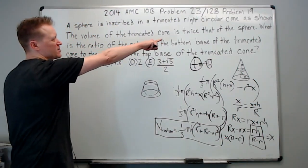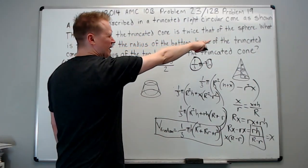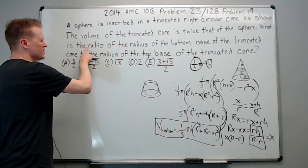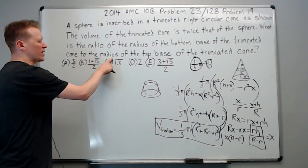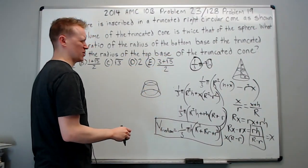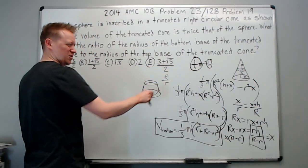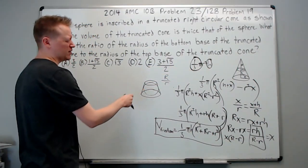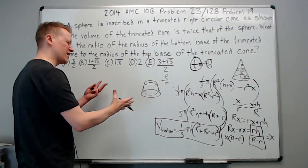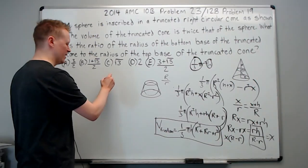Keep reading. So we've got the volume of the truncated cone is twice that of the sphere. What is the ratio of the radius of the bottom base of the truncated cone to the radius of the top base of the truncated cone? So we're looking basically for big R to little r from over there, but maybe we can make our lives a little easier. Number one, people aren't very good at drawing in 3D shapes, so it's better to try and think in a cross section.